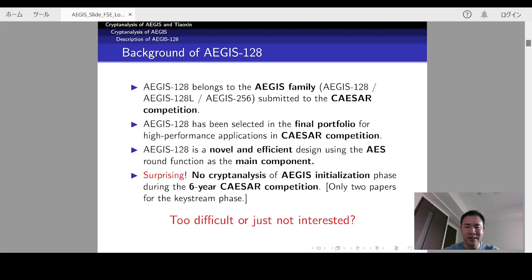This makes us wonder whether analyzing the initial phase is too difficult or this topic is just not interesting. Whatever it is, we think it's meaningful to analyze it because it has been selected as one of the winners of the competition, and its design using the AEGIS-128 round function has inspired several ultra-fast symmetric key primitives designs.